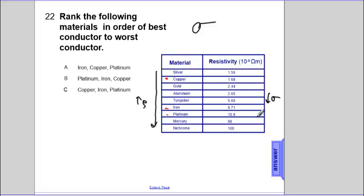As we go from copper to iron to platinum, we're going to increase resistivity. So copper has the smallest resistance. Iron has a moderate resistance. Platinum has a high resistance. So the worst conductor has the highest resistance.